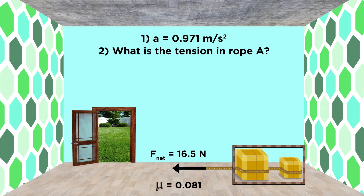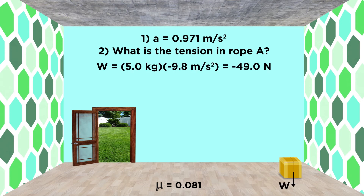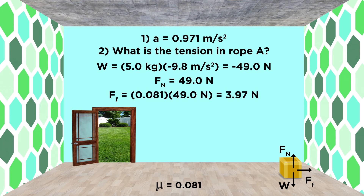Now for the trickier part. If we want to find the tension in rope A, we can't look at the whole system. We have to focus on the forces acting on the smaller box, so let's make a free body diagram for that one by itself. The gravitational force on this box is five kilograms times nine point eight for G, which is forty nine newtons. That will also be the normal force, as there is no vertical motion. The frictional force is therefore the frictional coefficient times the normal force, which gives us three point nine seven newtons in the negative direction.